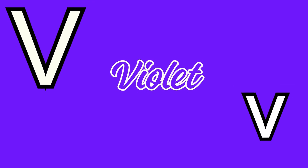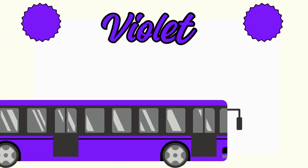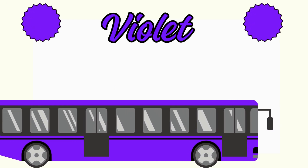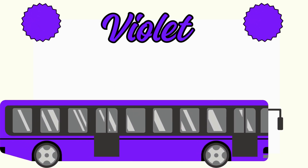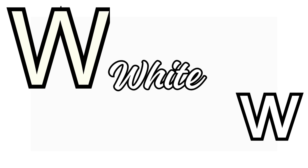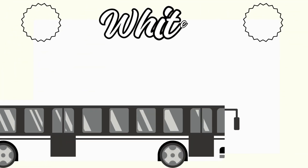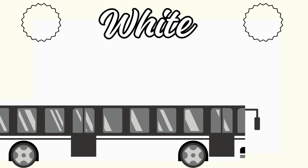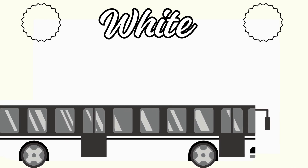V is for violet color. This is violet color bus. W is for white color. This is white color bus.